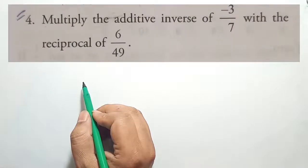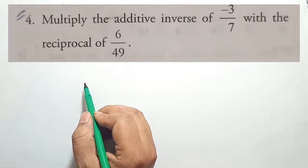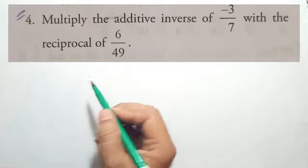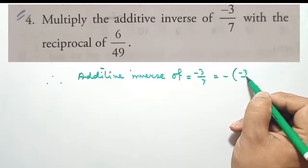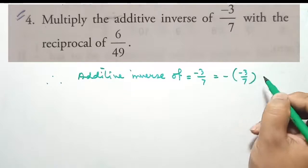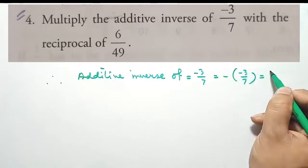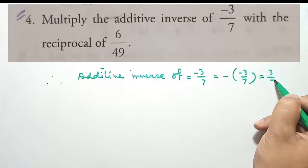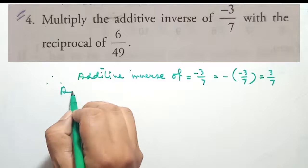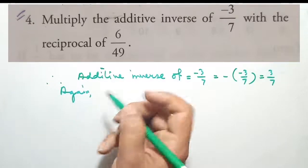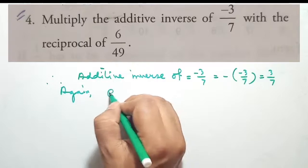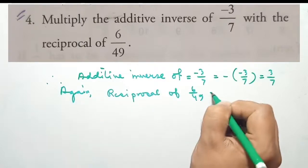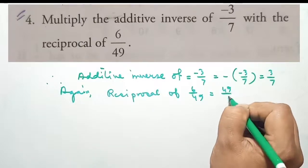Multiply the additive inverse of minus 3 by 7 with the reciprocal of 6 by 49. The additive inverse of minus 3 by 7 equals minus minus 3 by 7, and minus minus becomes plus, so we get 3 by 7. The reciprocal of 6 by 49 equals 49 by 6.